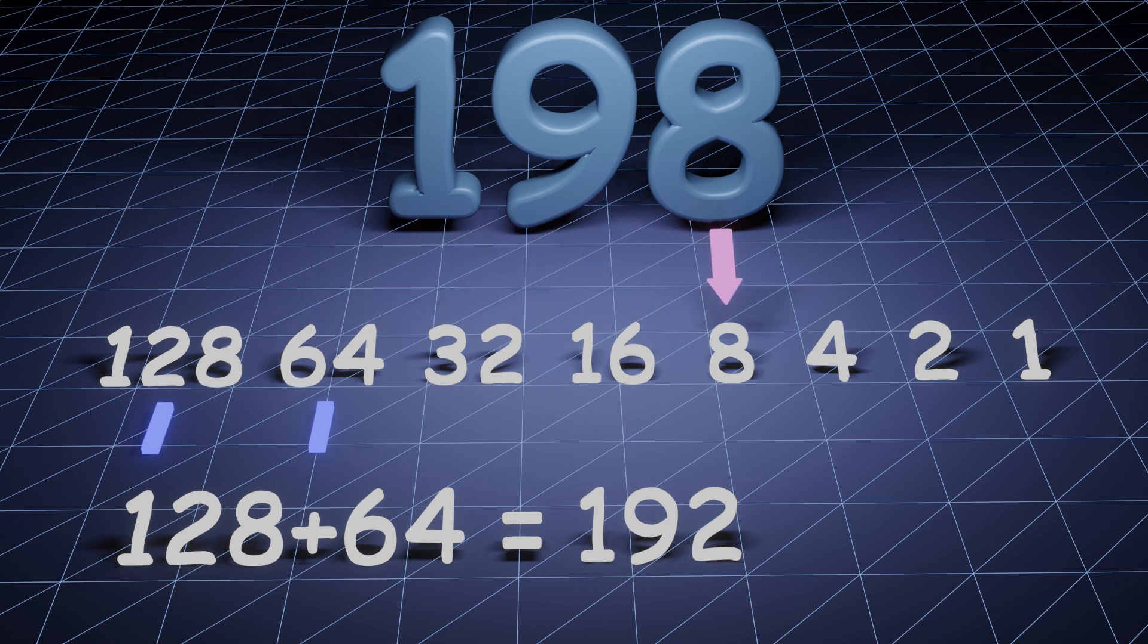We cannot add 32, 16, or 8 to our sum because we'll get a higher value than 198 in each case, so we'll place binary 0s below these numbers.